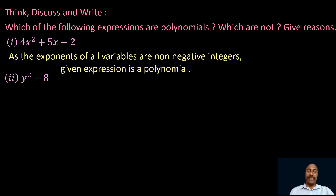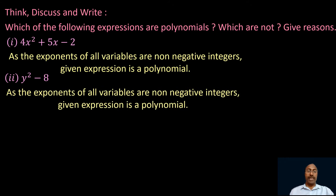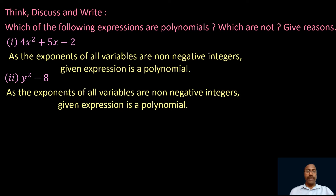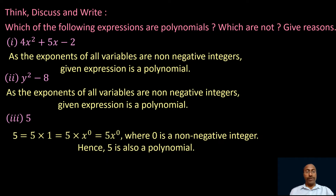Take the second one: y square minus 8. In this expression, the variable is y and the power of y is 2, which is a non-negative integer. Also, 8 can be written as 8·y⁰, so the power of y is 0, also a non-negative integer. Therefore the given expression is also a polynomial. The third expression is 5, and as we just saw, 5 is also a polynomial since 5 = 5·x⁰.